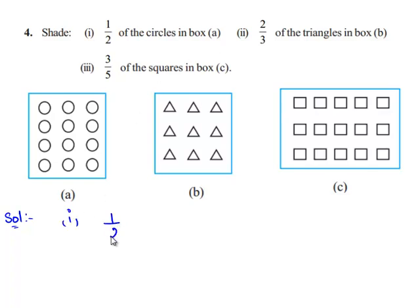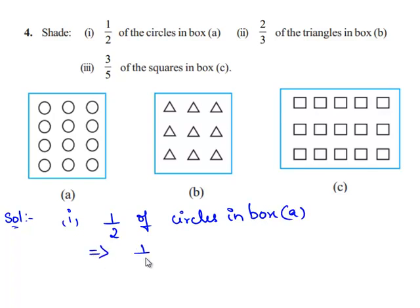1 by 2 of circles in box A implies 1 by 2 times the total number of circles in box A. There are 12 circles in box A, therefore 1 by 2 times 12. 2 goes into 12 six times.